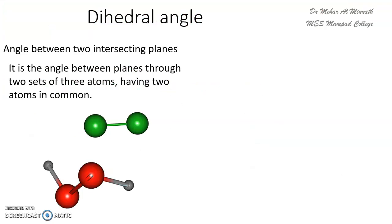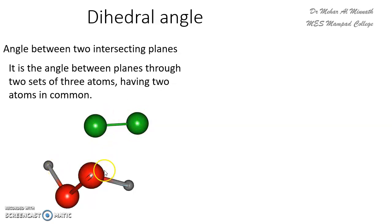When you rotate a single bond, the dihedral angle or torsion angle changes. The various conformations arise because of the change in the dihedral angle. The dihedral angle is the angle between two intersecting planes. Even in the case of chlorine, changing the dihedral angle changes nothing, but in hydrogen peroxide you have one plane H–O–O and another plane O–O–H; when you rotate the O–O bond, the angle between these two planes changes.